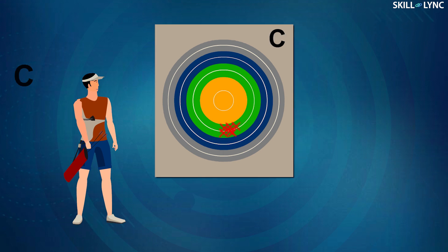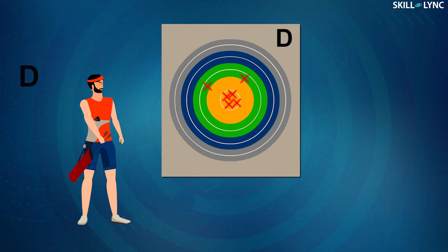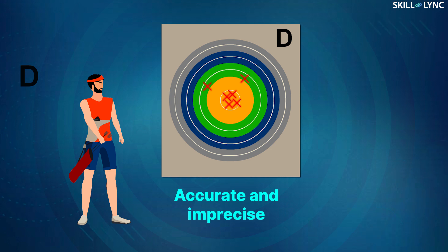The next participant was C. C was extremely unlucky as he got the damaged bow, and because of this all his arrows were away from the intended target. This means that C was inaccurate but precise, as the shots were not on the target but were near to each other. The next participant was D. D was not an expert archer but had a little bit of experience. Because of this, most of his shots were near the bullseye and a few weren't, so D was accurate but not precise.